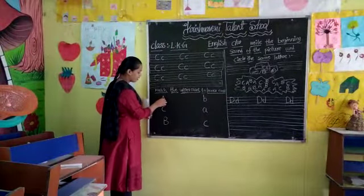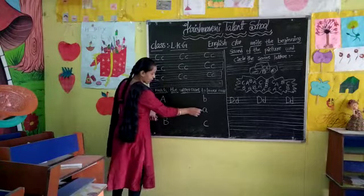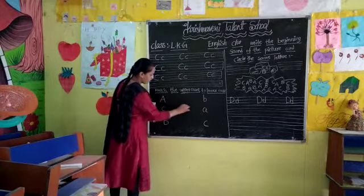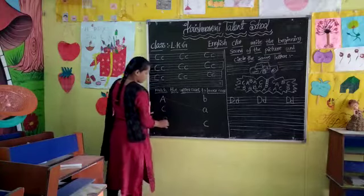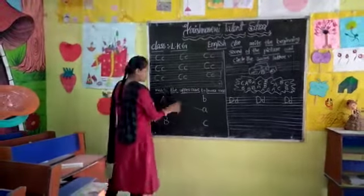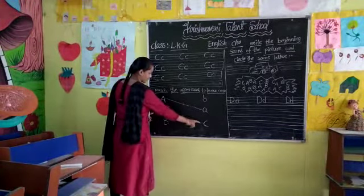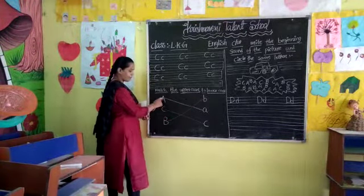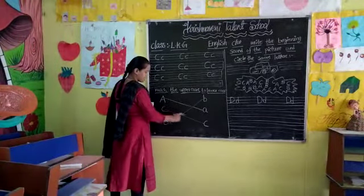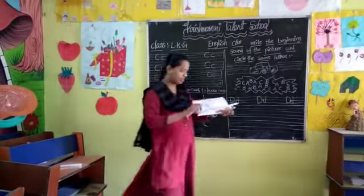What is there here? Uppercase letter is there. Uppercase A and we have to match the lowercase a. Capital A, small a. Capital C, small c. Capital B, small b. We have to match the uppercase to lowercase — uppercase and lowercase, uppercase, lowercase. Same here: capital A, small a; capital C, small c; capital B and small b. Very good children.